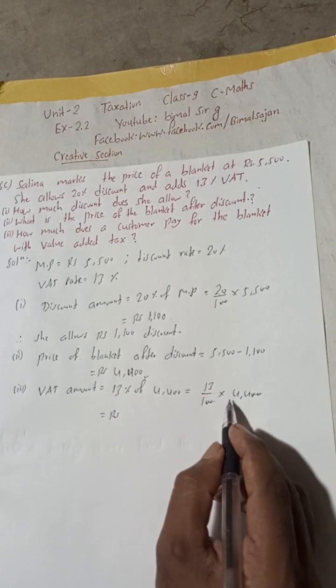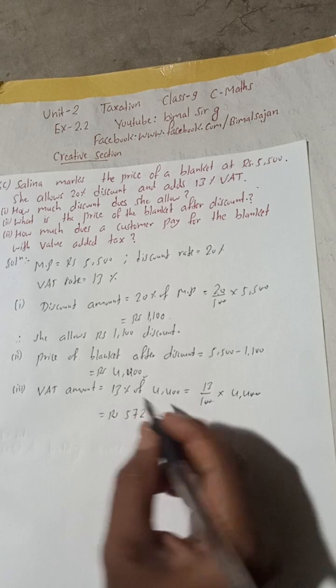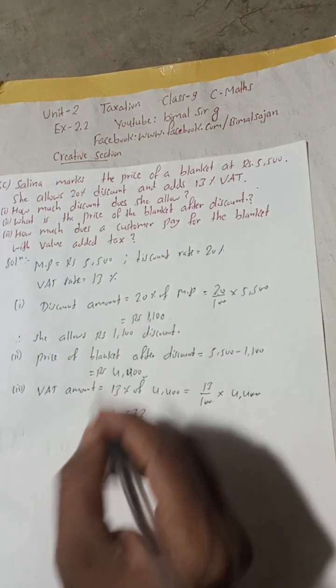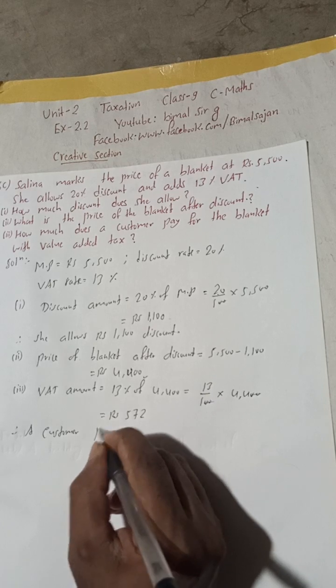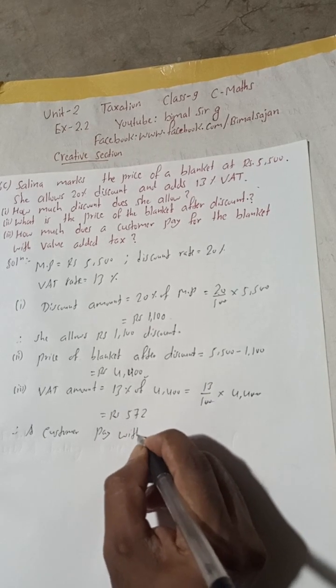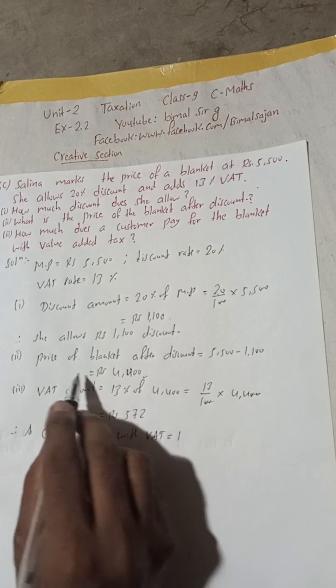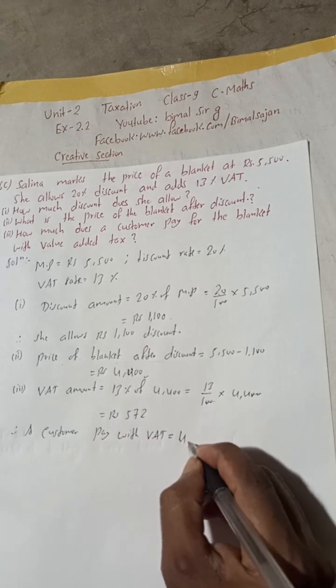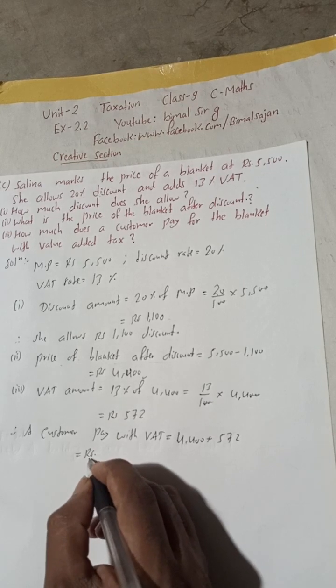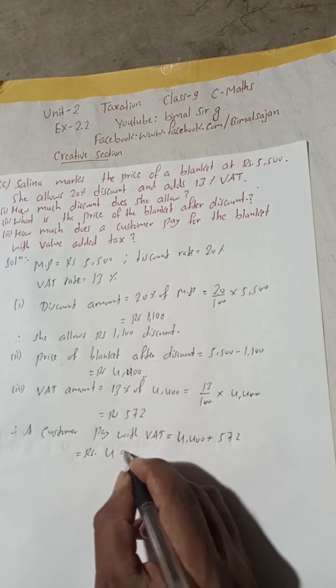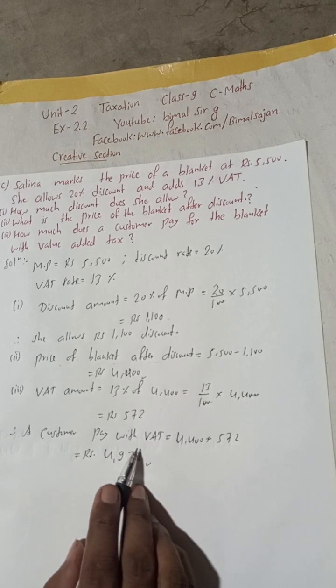Now, how much does the customer pay? So a customer pays, therefore a customer pays with VAT, with value added tax, with VAT, with value added tax is equal to how much? This is price of the blanket after discount, 4400, plus this VAT amount 572. So when we add these both you will get 4400 and 572, so 4972. So 4972 is the customer has to pay. So this is the complete solution of this 6c.